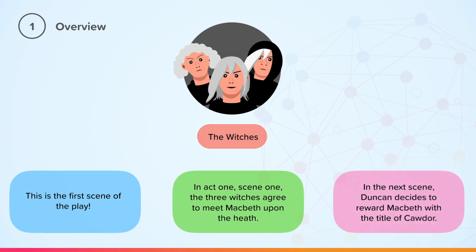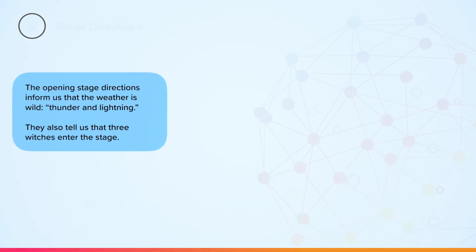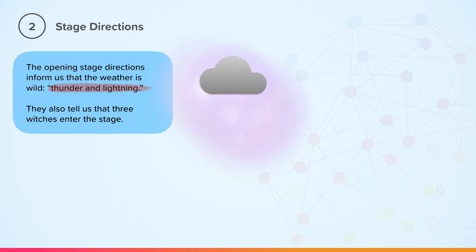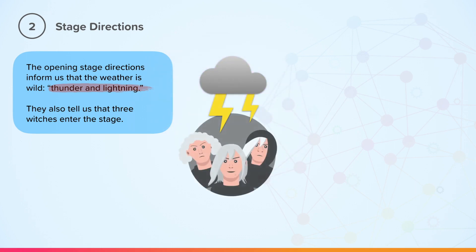In the next scene, Duncan decides to reward Macbeth with the title of Cawdor. The opening stage directions inform us that the weather is wild and stormy — thunder and lightning. They also tell us that three witches enter the stage.